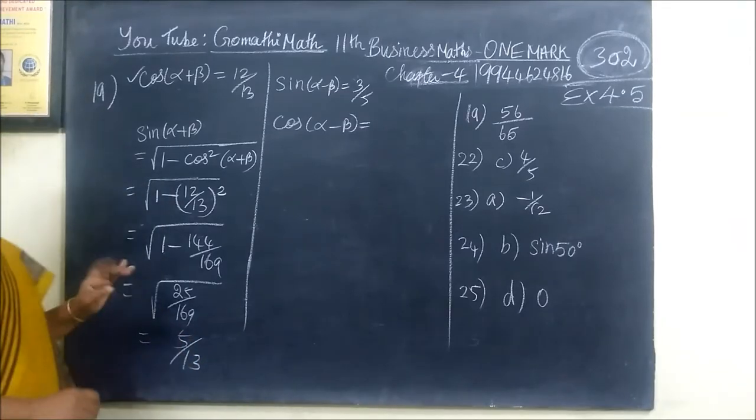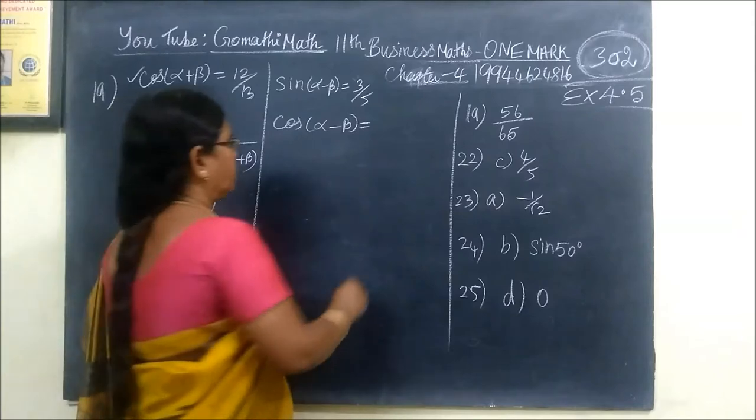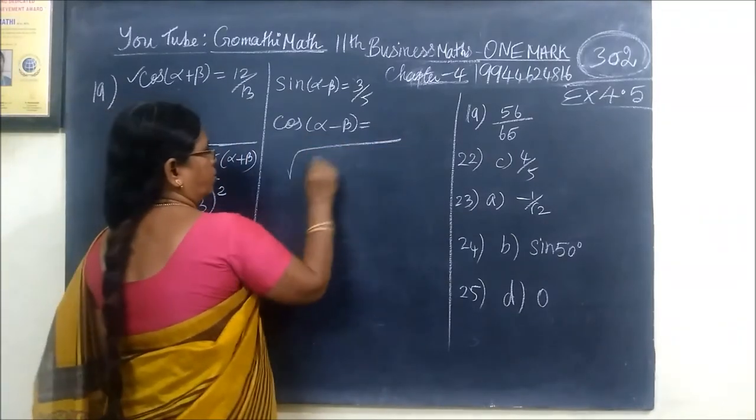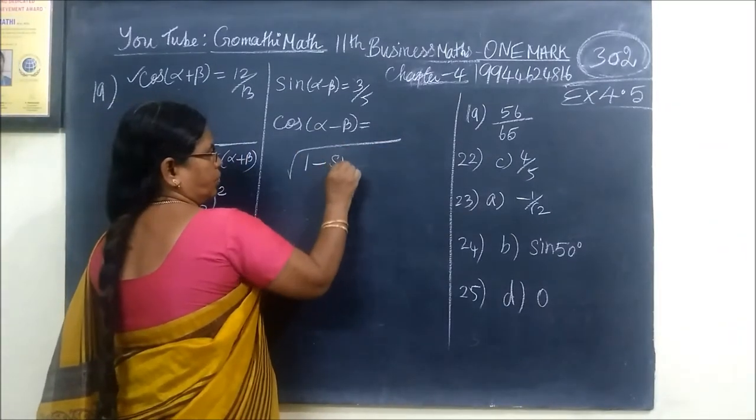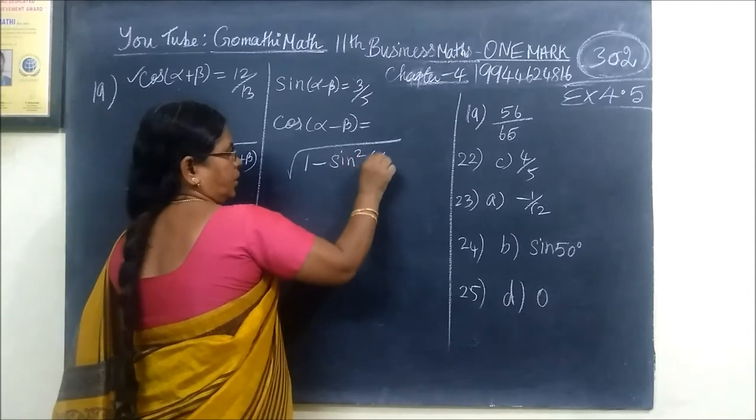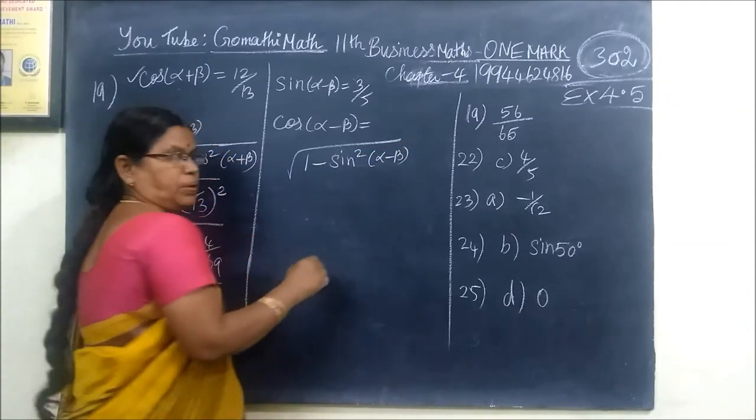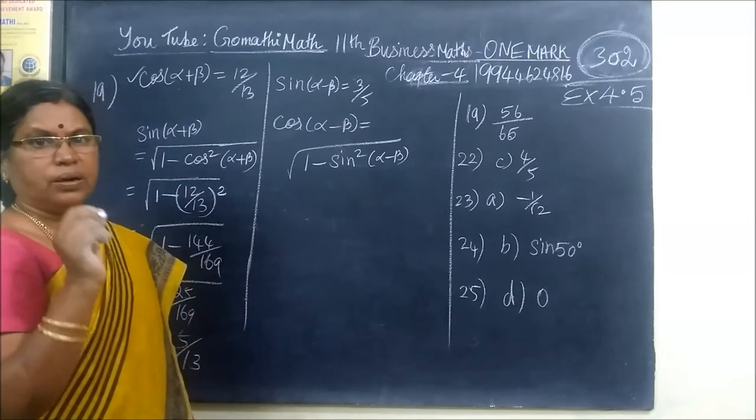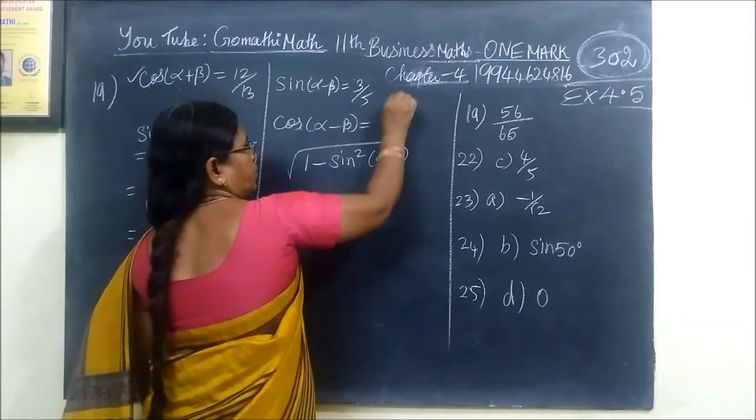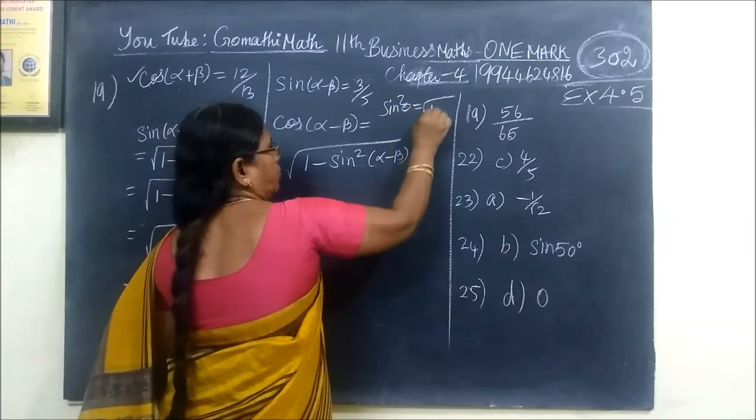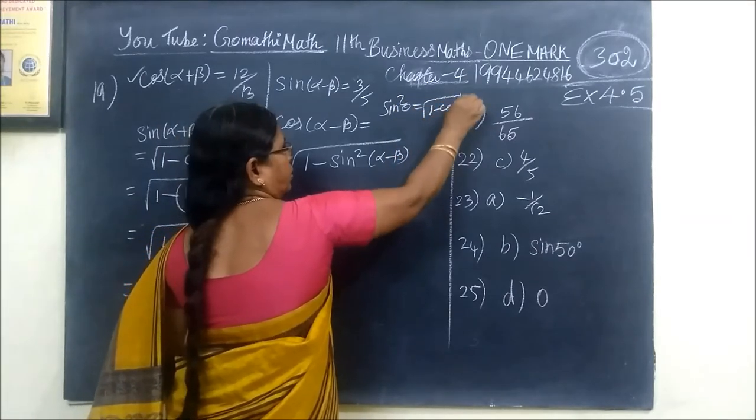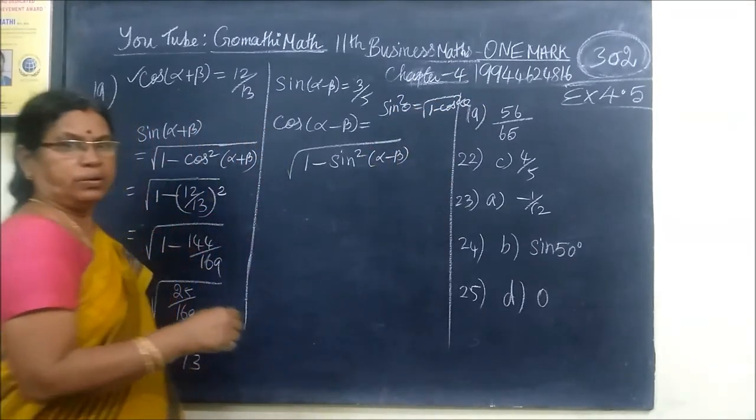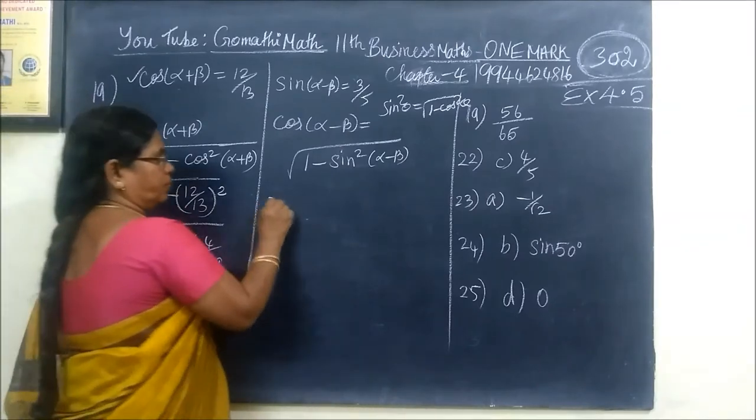Theta lies in the first quadrant, question number 1. So it is positive. In the same way, here also we are finding cos. 1 minus sin square, sin square theta equal to root of 1 minus cos square theta. These are the facts. Similarly, cos square theta equal to 1 minus sin square theta.